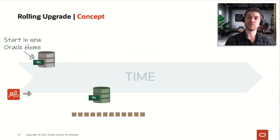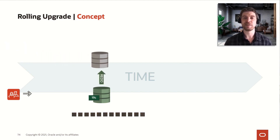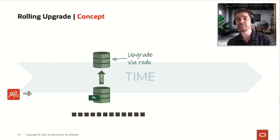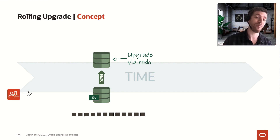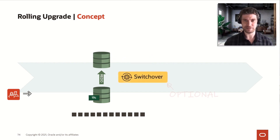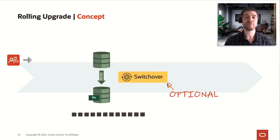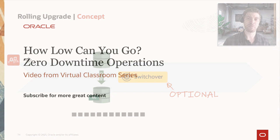Before doing that, we need to start up this database in the 19c version. Finally, we have the redo apply process moving from the logical standby database — which is our 19c and is now our primary database — to our former primary database. This last step is optional: we can do a switchback to have our primary database running again in the original environment if we want.